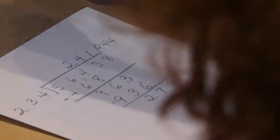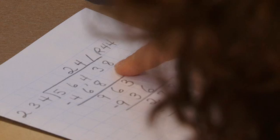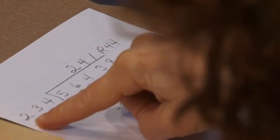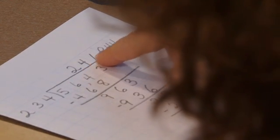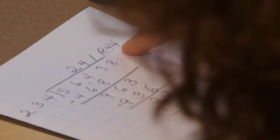So the answer to the problem 56,438 divided by 234 is 241, remainder 44.